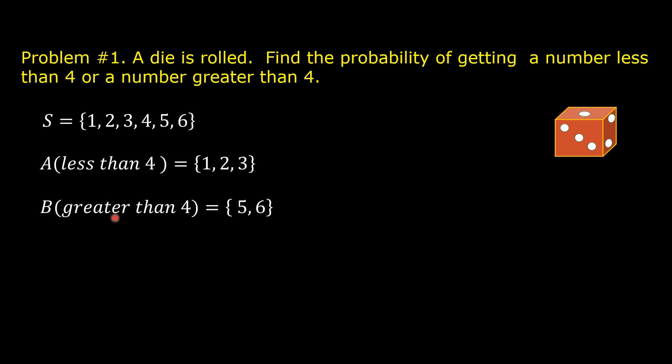Therefore, these two events are mutually exclusive events. If event A and event B are mutually exclusive, then the probability of event A or event B is equal to the sum of their respective probabilities. In symbols, P(A or B) is equal to P(A) plus P(B).